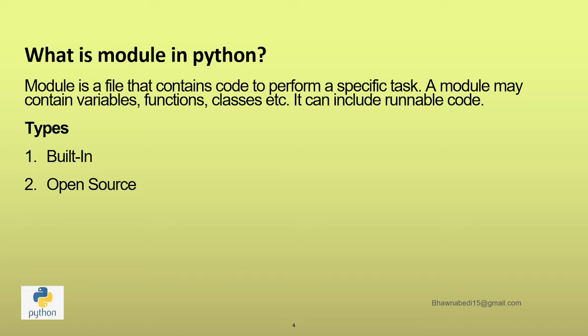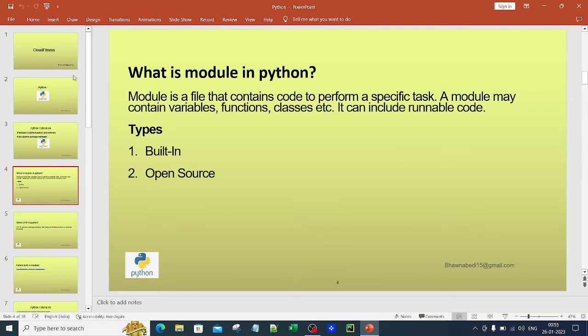When I talk about modules, there are two types: built-in modules and open source modules. When you install Python, there are modules which come inherently with Python — those are called built-in modules. The Python interpreter already has access to those modules; you simply need to import them in your code and use them. But when you talk about open source or external modules, the module is not there with the Python interpreter — you need to download the module from the internet, import it, and then use it. That is the difference between built-in and open source.